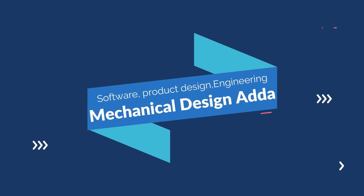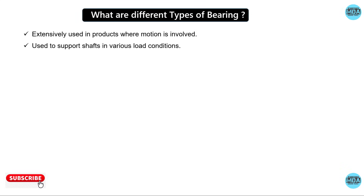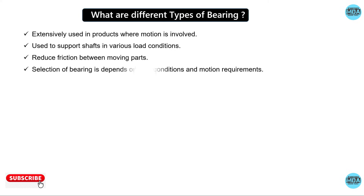Hello friend. In this video you will learn the different types of bearing and its application. The bearing is a mechanical component used to support the shaft from various load conditions and reduces the friction between the moving parts. Bearings are used where motion is involved.